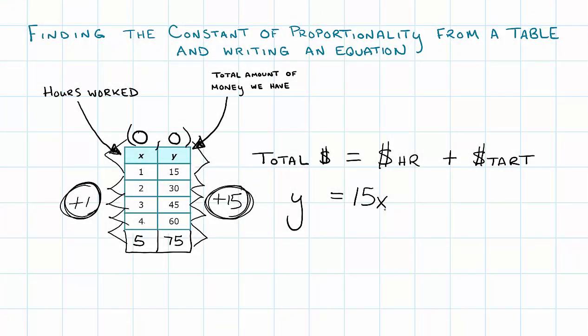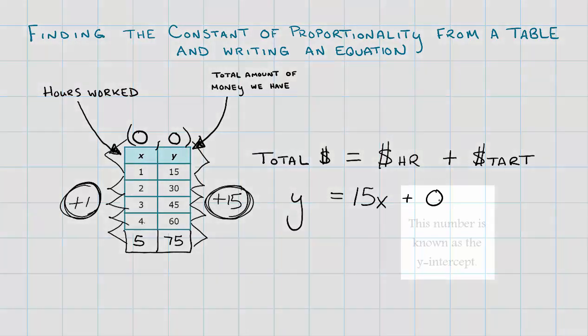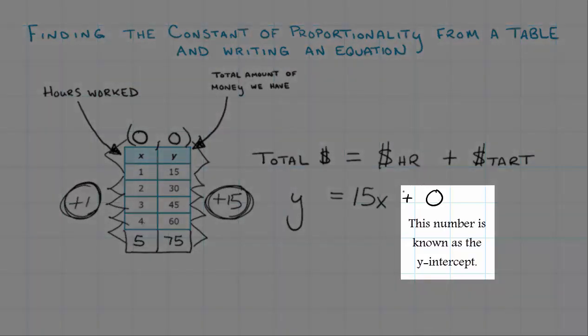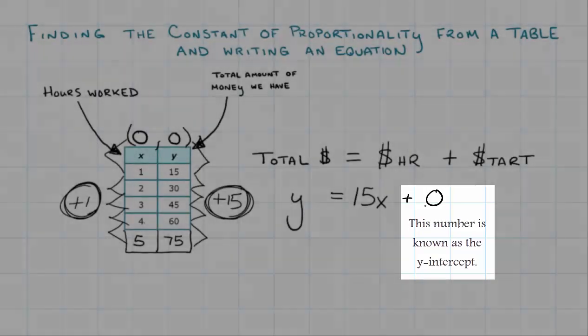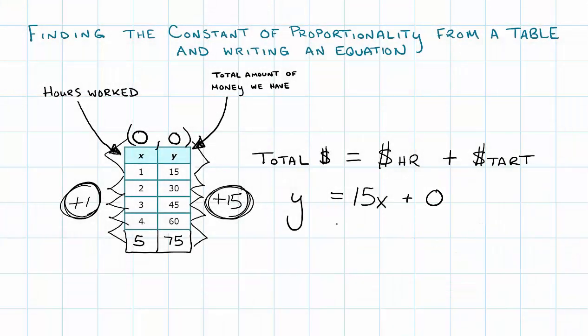We didn't start with anything. Our starting amount is zero, and that's what makes our equation proportional. If this starting amount wasn't zero, then it wouldn't be a proportional relationship. We can write this equation as y = 15x + 0, or the way that it's normally written is y = 15x. We don't have to put the plus zero, because if there's nothing there, we know that we started with zero dollars.